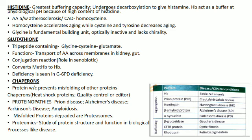Glutathione is a tripeptide containing three amino acids: glycine, cysteine, and glutamate. It helps in transport of amino acids in kidneys and gut, assists in conversion of methemoglobin to hemoglobin, and its deficiency may lead to G6PD deficiency.